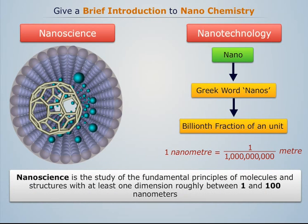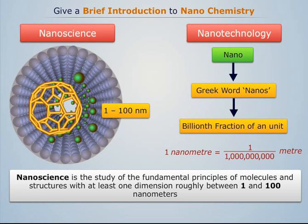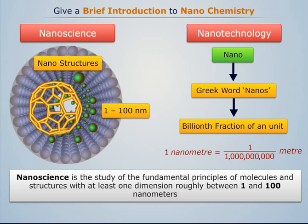Basically, nanoscience is the study of the fundamental principles of molecules and structures with at least one dimension roughly between 1 and 100 nanometers. Such structures whose dimensions are of the order of 1 to 100 nanometers are known as nanostructures.